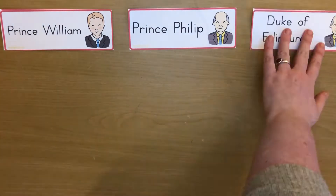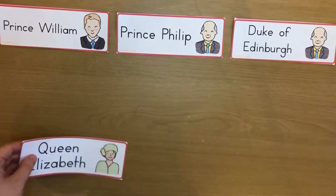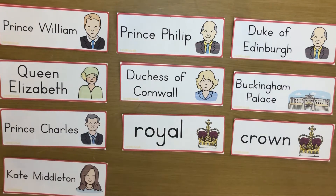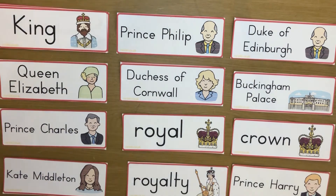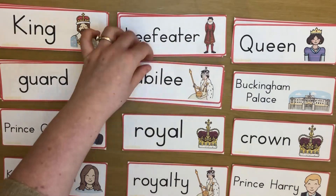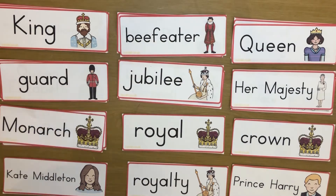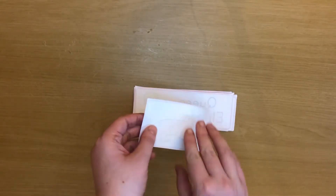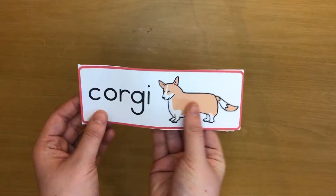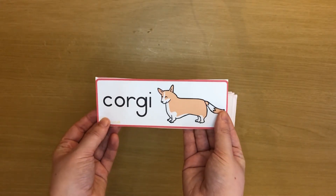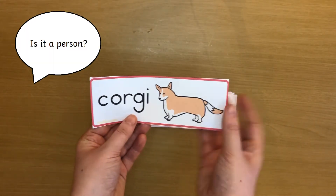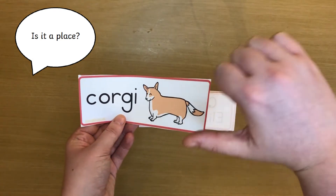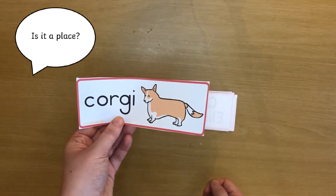These royal family vocabulary cards are great for supporting children with a royal family topic, to help children become more familiar with the vocabulary. You could play some games — one child can pick a card and keep it secret, and the other children in their group can ask yes or no questions. Can they work out the word on the card?